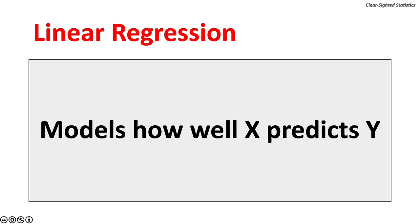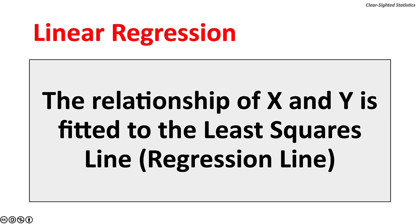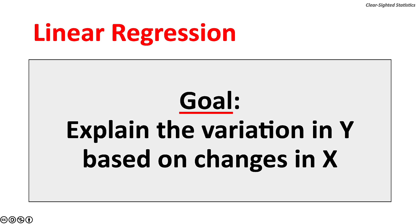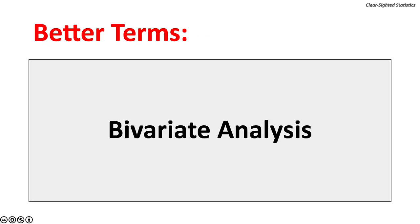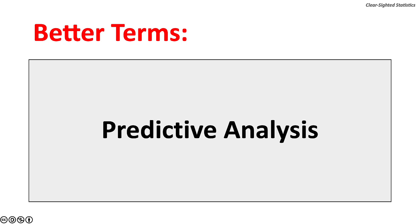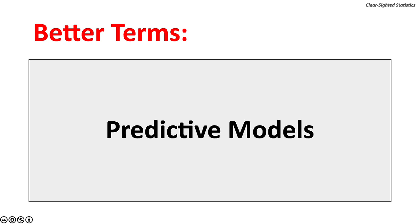Linear regression models how well the independent or explanatory variable X predicts the dependent or response variable Y. The relationship of X and Y is fitted to the least squares line. Deviations of the XY measures from this line are called residuals — errors that the regression model does not explain. The goal of linear regression is to explain the variation in the dependent variable Y based on changes in the independent variable X. Better terms for regression might be bivariate analysis, two-variable analysis, predictive analysis, or predictive models.